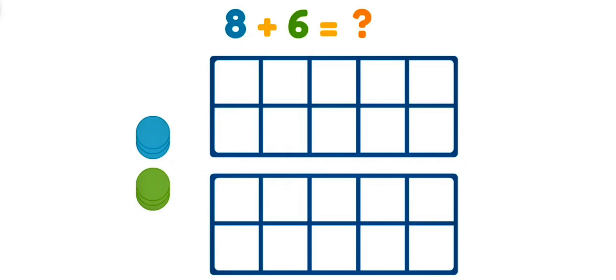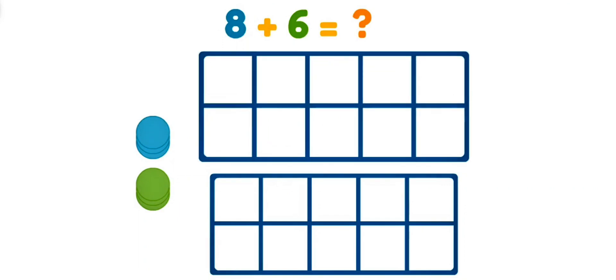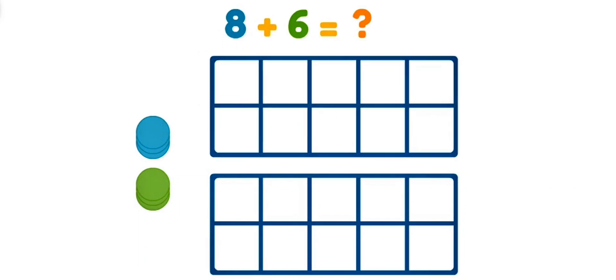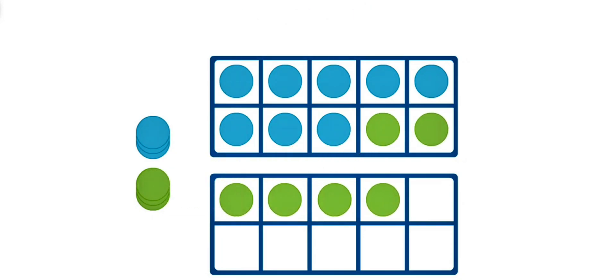What is eight plus six? Let's use a ten frame to figure it out! This is a ten frame, because ten dots fit inside! Let's move the dots from the equation into the ten frame! Let's put eight in here! And only two more can fit! We have ten! And four singles! Ten plus four is fourteen!